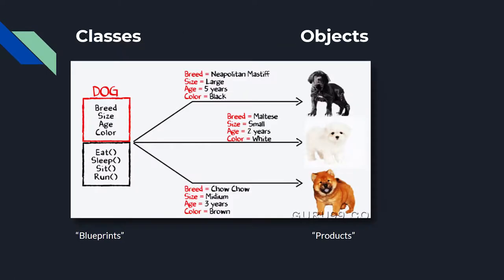A fundamental part of Java and other object-oriented programming languages is the relationship between classes and objects. Classes can be described as the blueprints for objects, while objects can be seen as the product of the class. When a new object is created, it must be linked to a class, where it takes on the variables and functions of that class. The key idea is that different objects can have different values for the same variable in a class.